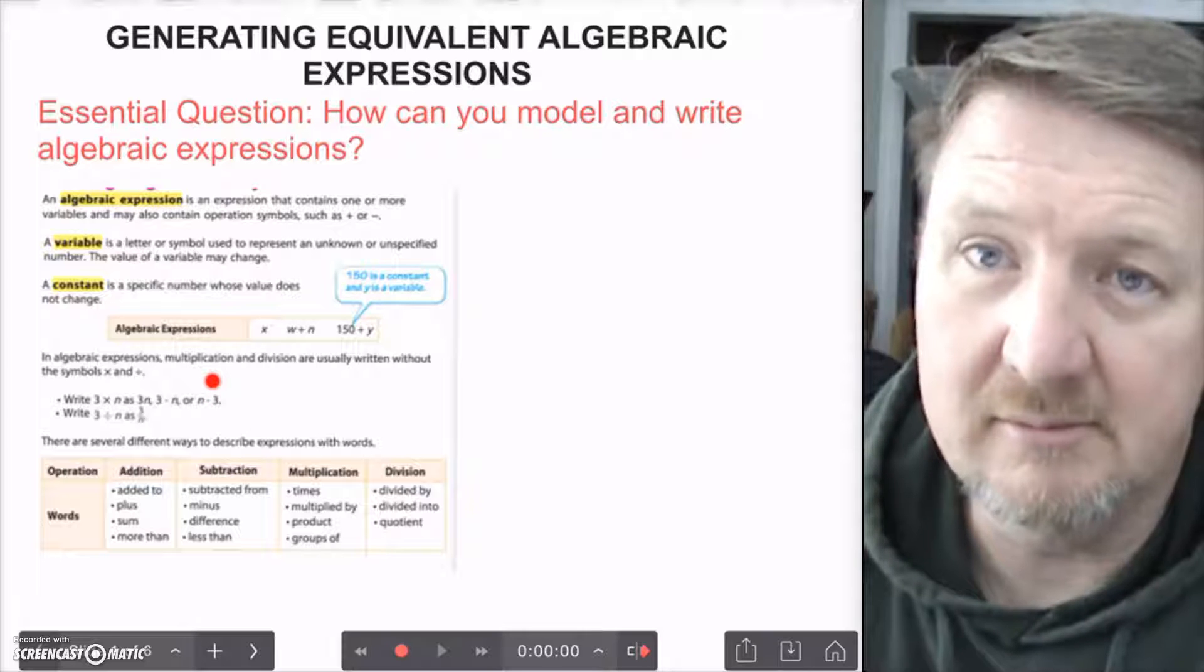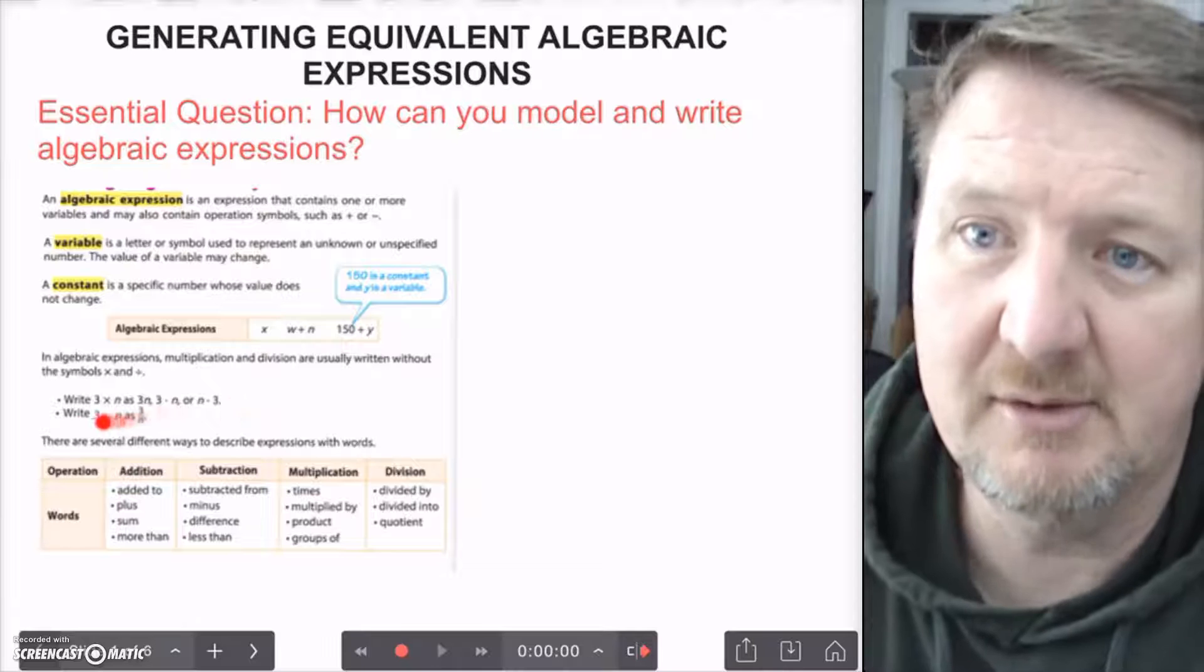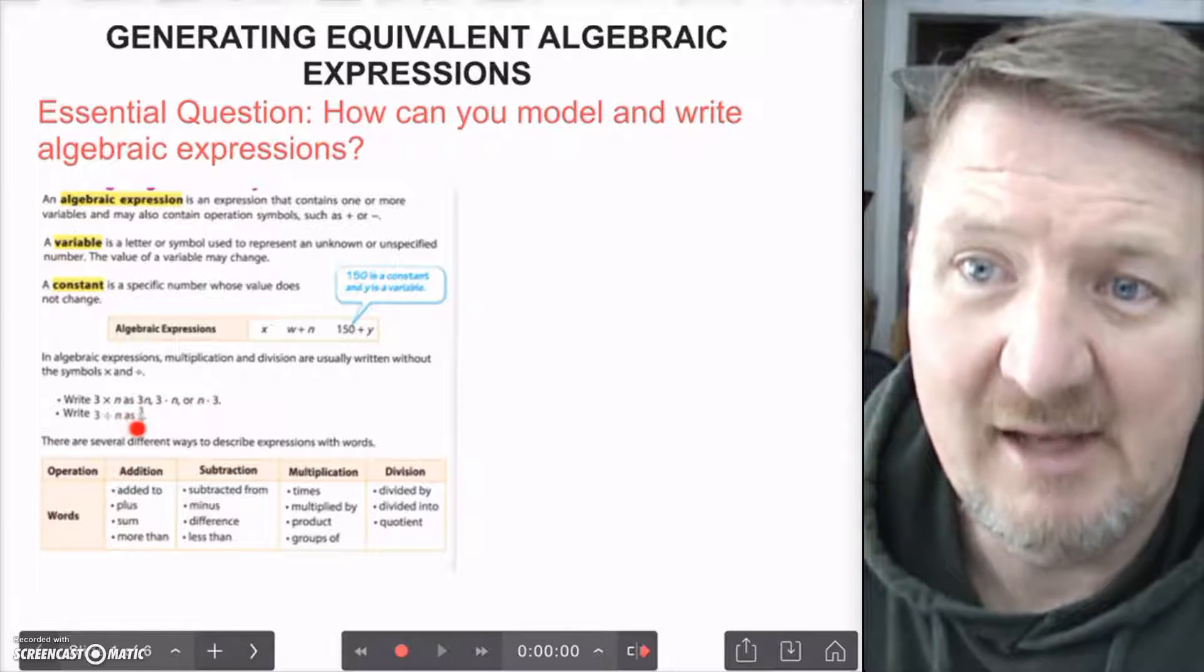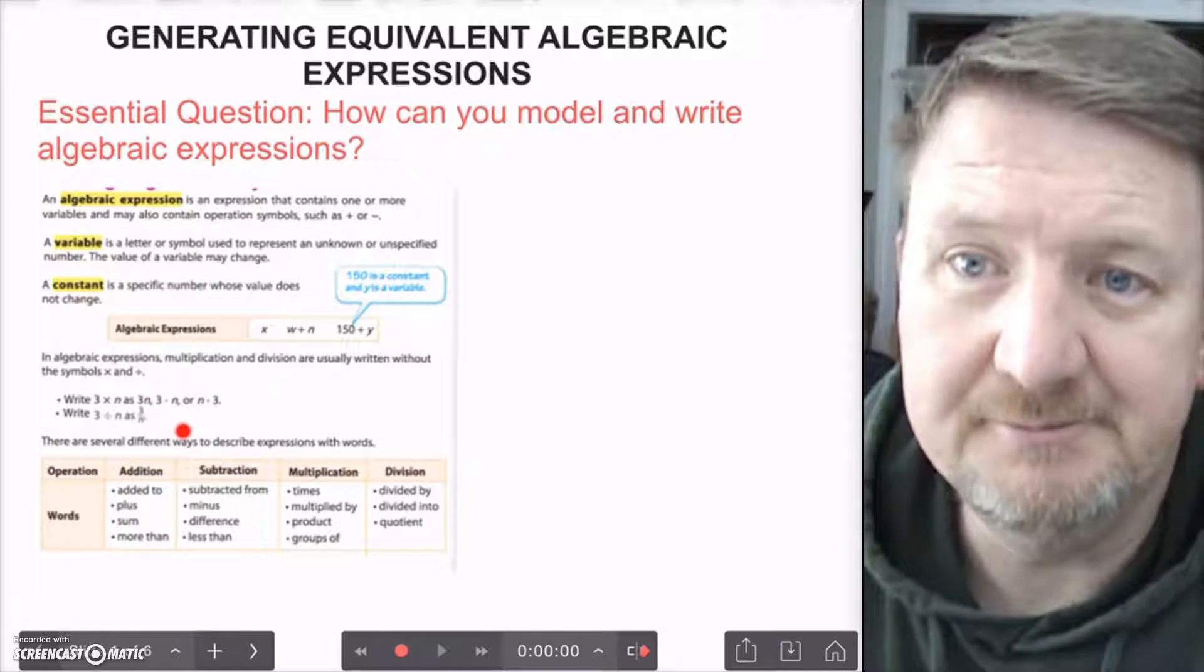So it says write 3 times n as 3 next to an n. When you see a number next to a variable, that means to multiply. Or you can write it with this dot in the middle. That also means to multiply. Or you can rearrange it. Once again, multiplication and addition are commutative, so you can switch them around.